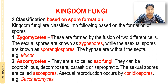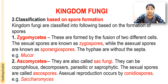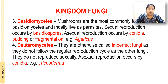The second group is Ascomycetes, also known as sac fungi. They can be coprophilous, decomposers, parasitic, or saprophytic. The sexual spores are called ascospores, and asexual reproduction occurs by formation of spores called conidia. Example is Saccharomyces.